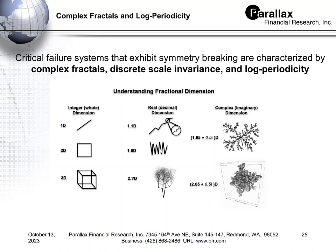There's another class of fractals using complex fractal dimensions — a relatively new idea we see in crystal growth — where you have a real and an imaginary part to the dimension. If you remember from algebra, the square root of negative one is a complex number. Complex numbers have two parts: a real part and an imaginary part. In fractals, the imaginary part creates a situation where you do not have perfect scale invariance. You have discrete scale invariance, which produces something called log periodicity.